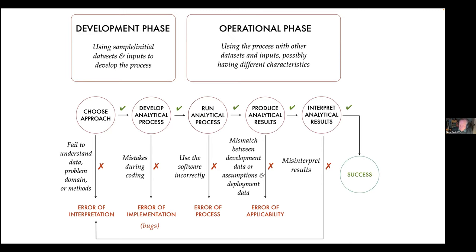At the end, either we or someone else can misinterpret our results — another kind of error of interpretation. It's only if we avoid all those things that our first run through is going to be correct. And when we have an operational setup, we typically run that part of the pipeline many times, so there are lots of opportunities for things to go wrong.